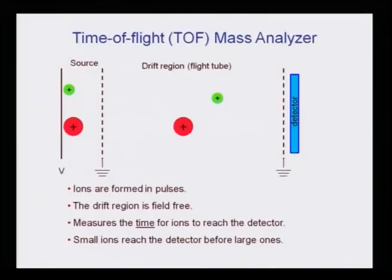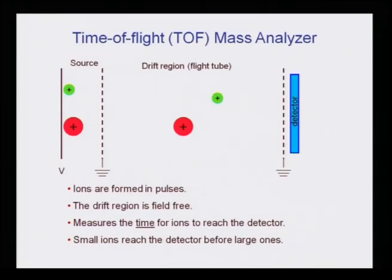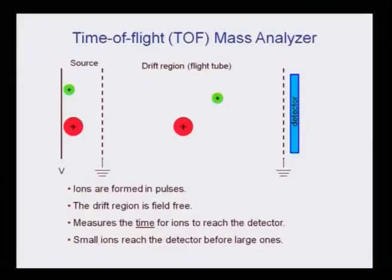In the time of flight, or TOF, mass analyzer, the source generates both small and large ions. Smaller ones travel faster toward the detector while larger ones drift behind due to greater mass. Ions are formed in pulses, the drift region is field-free, and the instrument measures the time for ions to reach the detector — small ions reach the detector before large ones.